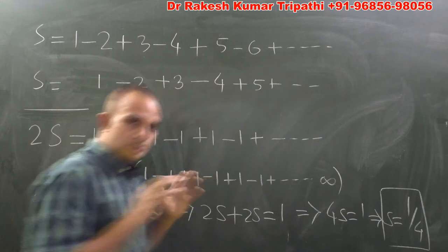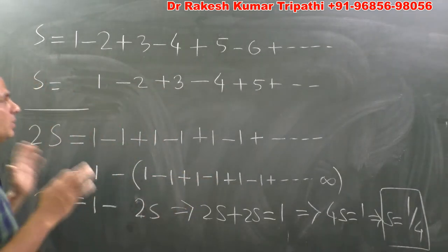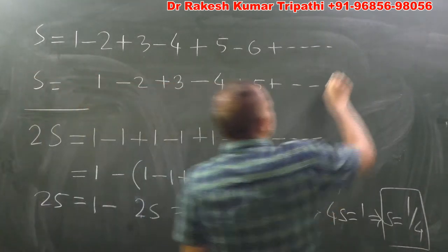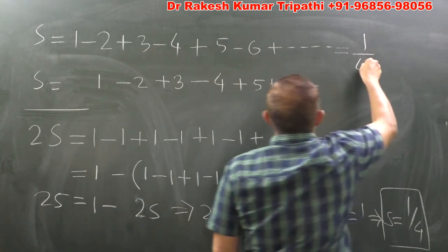So 4S is equal to 1, which implies S is equal to 1 by 4. So according to this proof, it looks like the sum is 1 by 4.